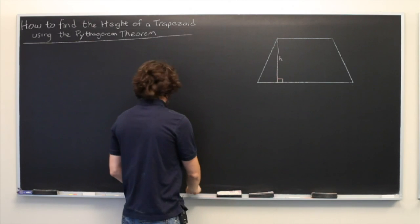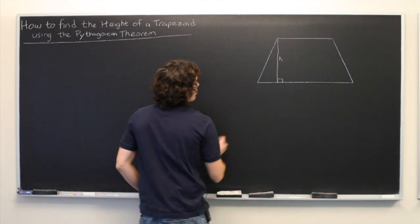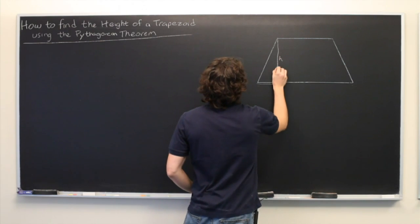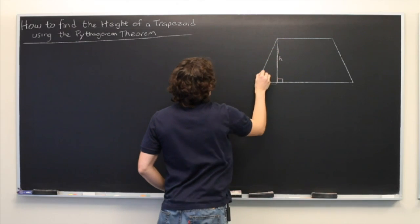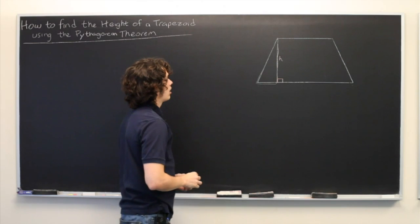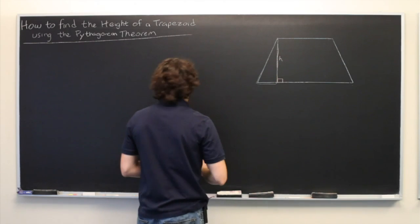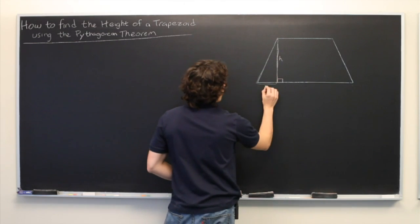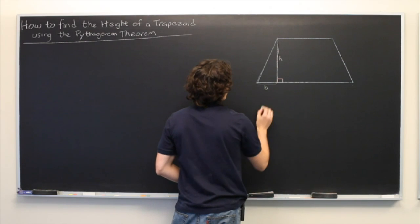Now, you'll notice that this shape right here is a right triangle. We can use Pythagorean Theorem to determine the height, but only if we know this, which we'll call the base,